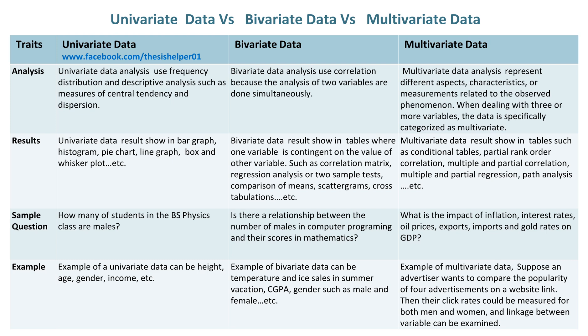Examples of univariate data include height, age, gender, income, etc.